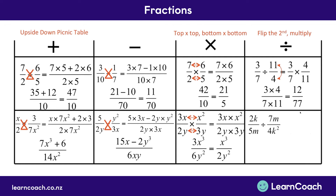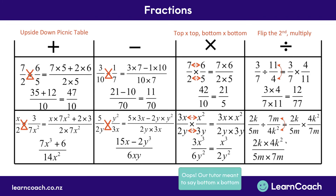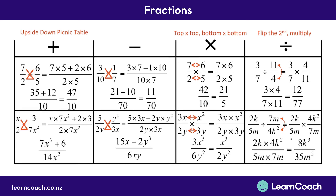Let's look at this using algebraic symbols. Here we have 2k over 5m divided by 7m over 4k squared. Remember our first step is to flip the second fraction over, so we flip 7m divided by 4k squared. This gives us a multiplication fraction of 2k over 5m multiplied by the flipped 4k squared divided by 7m. Now we can do top times top and bottom times bottom. The top 2k multiplied by 4k squared gives us 8k to the power of 3, and on the bottom 5m multiplied by 7m gives us 35m squared.